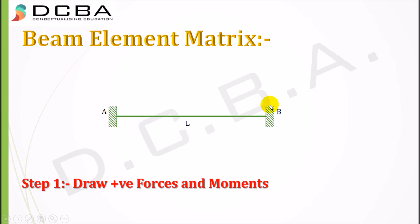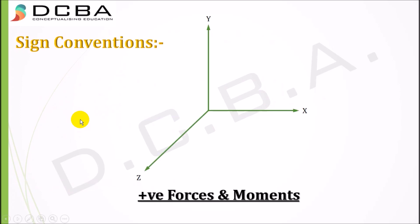This is our beam element — or rather, a simple element for now with length L. The first step is to draw positive forces and moments. As you can see, there is a Cartesian coordinate system with three axes: x, y, and z. All forces acting along these axes are called positive forces. The z-axis is coming towards you — towards you is positive, away from you is negative. The y-axis going upward is positive; the x-axis going rightward is positive.